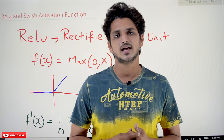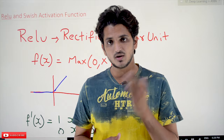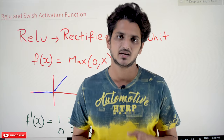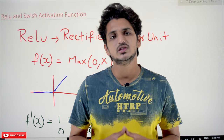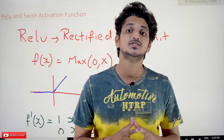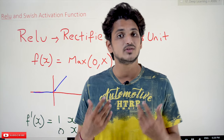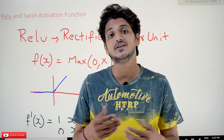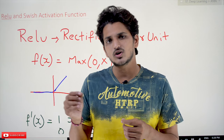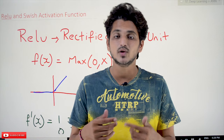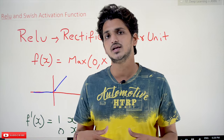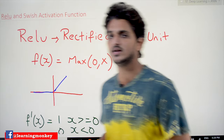Coming to today's class, before going into the concept of ReLU and Swish activation functions — in our last class when we discussed about sigmoid and tanh activation functions, what was the problem with the tanh activation function? We had the vanishing gradients problem. Why did we get that vanishing gradients problem? Because the differentiation value we were getting was almost near to 0 — 0.000 something like that. That is why we get a vanishing gradient problem. In order to overcome that, they started using the ReLU activation function.